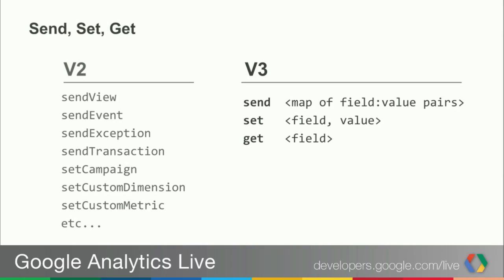Similarly, the specific set methods for things like setting campaign, custom dimensions, and custom metrics are all replaced by a general set method that takes a field name and value. The get method is somewhat new to the SDKs — you can query the values of tracker object fields that you've previously set, or that are automatically set on your behalf. Pretty much any field can be set or retrieved from the tracker.